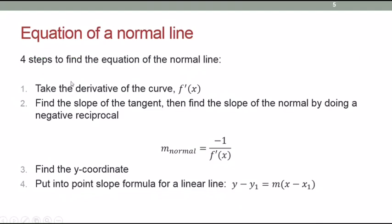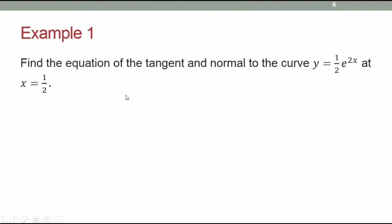There are four steps to find the equation of the normal line, just like the steps for the tangent line. Step 1: take the derivative to find f'(x) or dy/dx. Step 2: find the slope of the tangent line first, then find the slope of the normal by taking the negative reciprocal: −1/f'(x). Step 3: find the y-coordinate. Step 4: put into the point-slope formula y − y₁ = m(x − x₁), where m is the slope of the normal line.